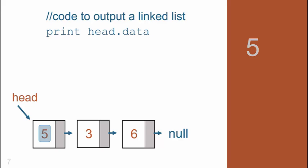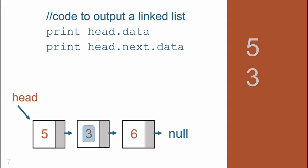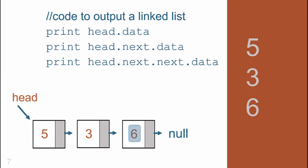Let's see how we would output these values. This one's pretty obvious. Print head.data. We output the value five, which is the data in the head object. How would you do the three and the six? Well, it would be head.next.data and then head.next.next.data. You probably figured that out.